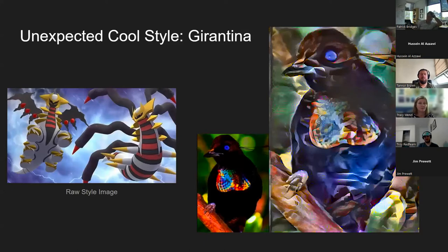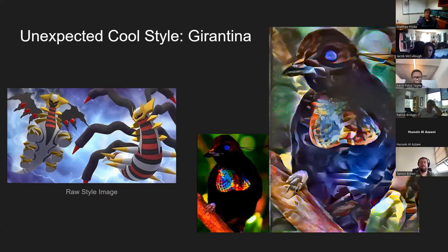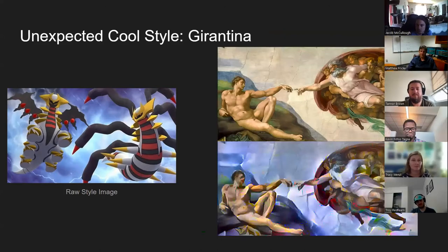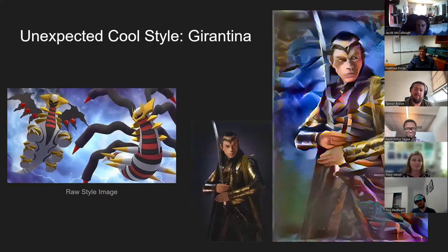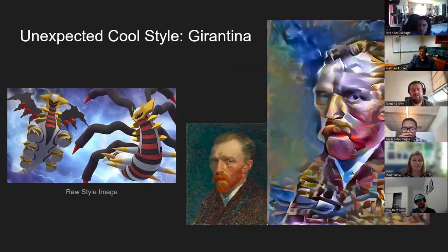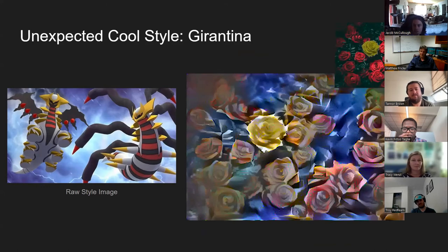The final unexpected cool style is a picture of Giratina, a Pokemon. It made everything look like a painted version of itself. Here's a cool bird as if it were painted instead of photographed. Here's the Creation of Adam in the Giratina style — the cracks in the back of the painting make it look like someone painted it on paper and then crumpled and uncrumpled it. Here's Elrond from Lord of the Rings, the Last Supper — the table looks like folded paper. And Van Gogh's self-portrait in this style. Lastly, these roses started out very red and green and turned out pink and blue, but still very clearly roses — just looking like a painting.